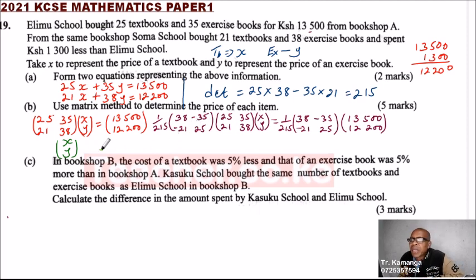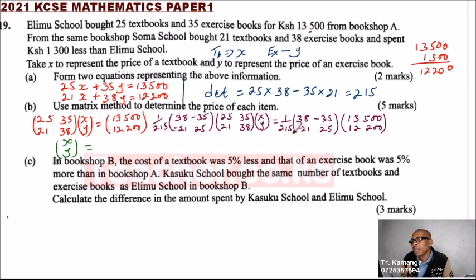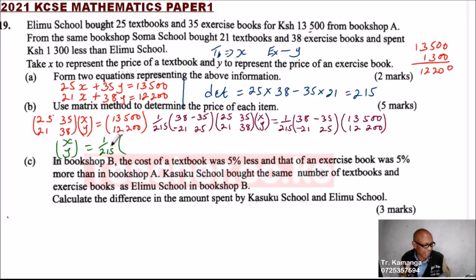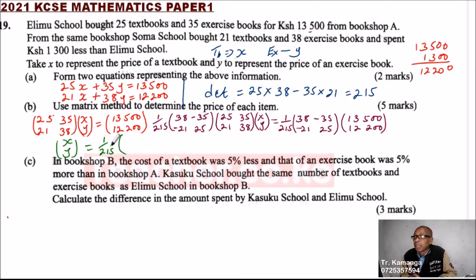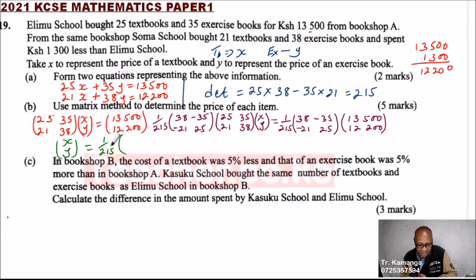It would be a waste of time to work out the left side if you have correctly found the inverse. So what we need to work out is the right side. We say it is 1 over 215, times the bracket: 38 multiplied by 13,500, minus 35 multiplied by 12,200.